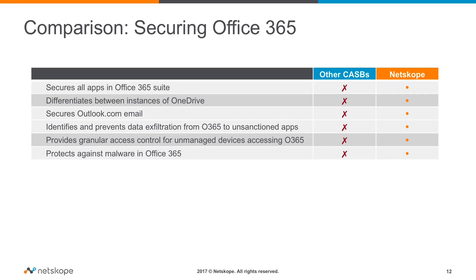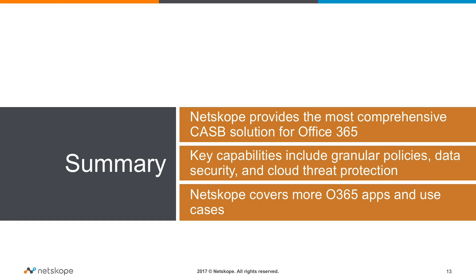As you can see, Netscope has a big advantage when it comes to securing Office 365. Only Netscope secures all apps in the Office 365 suite, differentiates between instances, secures Outlook.com email, identifies and prevents data exfiltration from Office 365 to unsanctioned services, provides granular access control for unmanaged devices, and protects against malware in Office 365. In summary, Netscope provides the most comprehensive CASB solution for Office 365. Key capabilities include granular policies, data security, and cloud threat protection — covering more Office 365 apps and use cases.